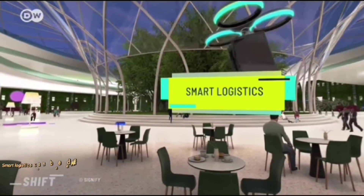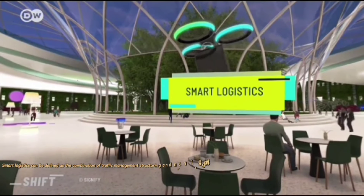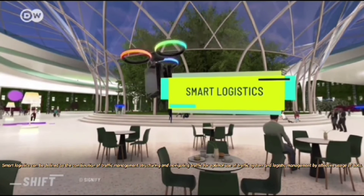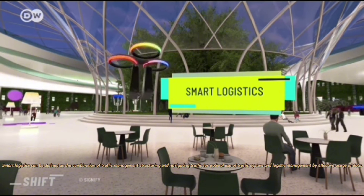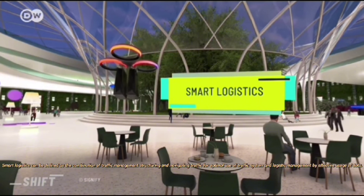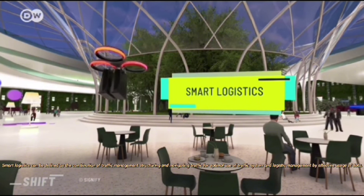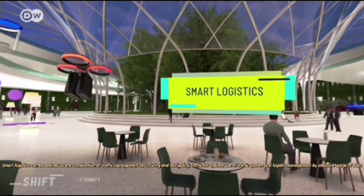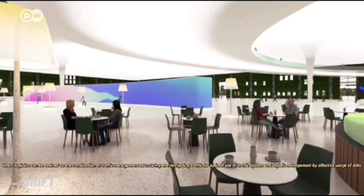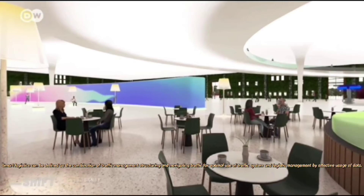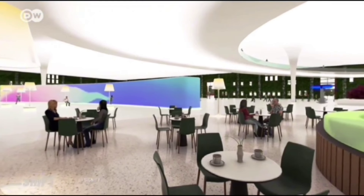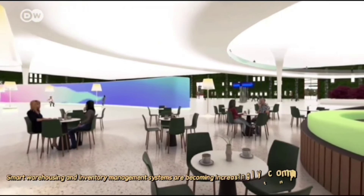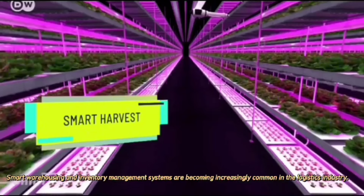Smart logistics can be defined as the combination of traffic management, structuring and navigating traffic for optimal use of traffic systems, and logistic management through effective usage of data. Smart warehousing and inventory management systems are becoming increasingly common in the logistics industry.